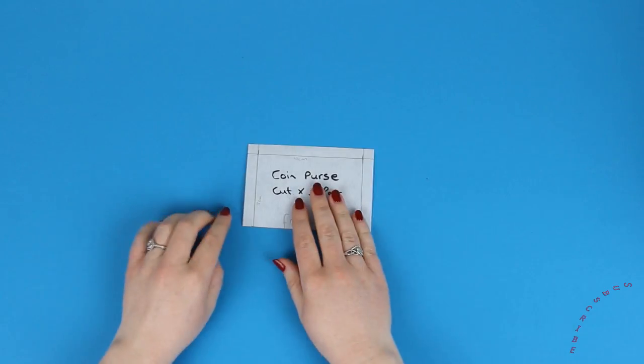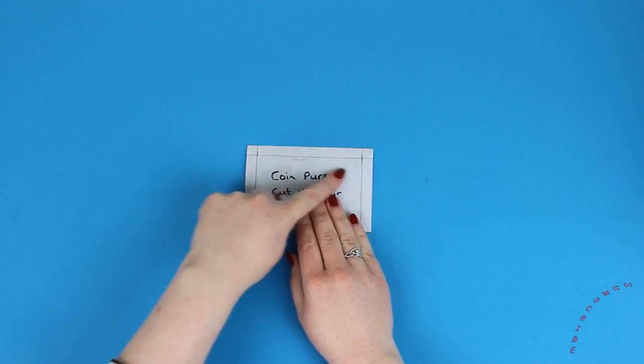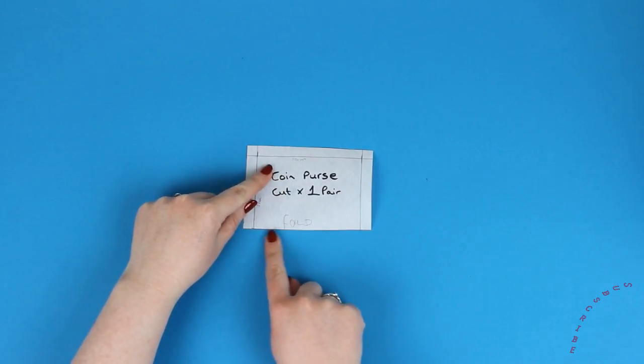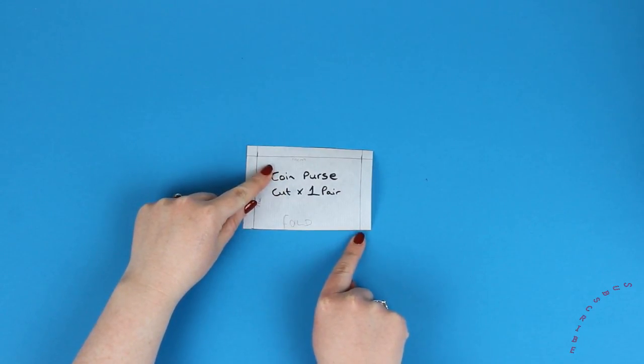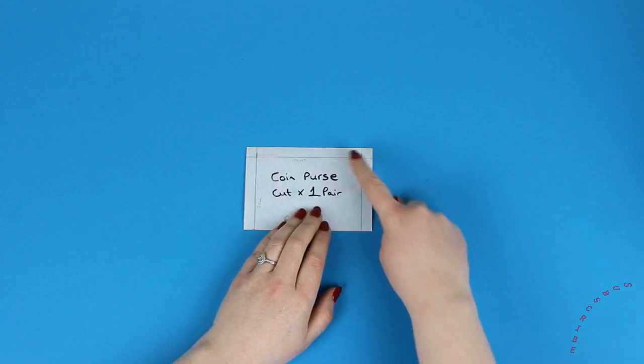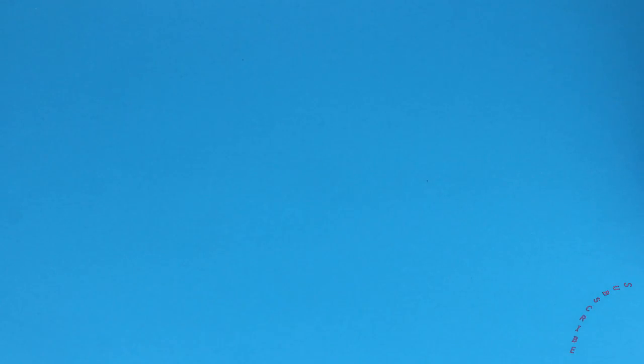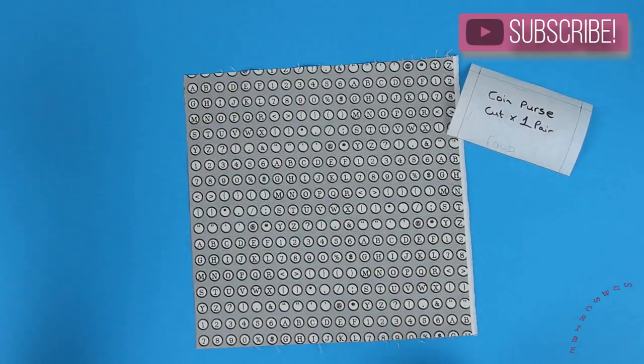Okay, so for the pattern simply choose the length and width that you want your purse to be. So I chose seven centimeter long and ten centimeter wide. Once you've made your basic shape of the purse you're going to want to add one centimeter seam allowance to the top and the sides, and then the bottom is going to be left on its own because it's going to be on the fold.